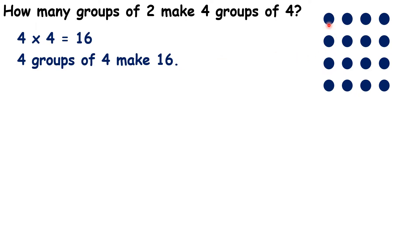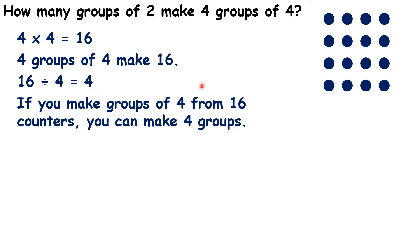We could also look at the array we have here in a different way. We can show that 16 divided by four is four, because if you make groups of four from 16 counters, like we have here, you can make four groups.